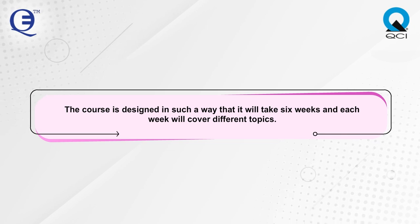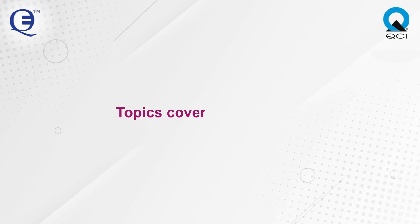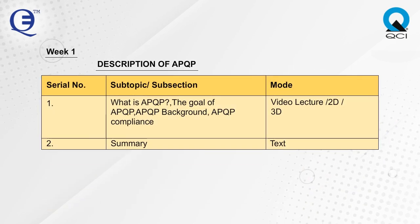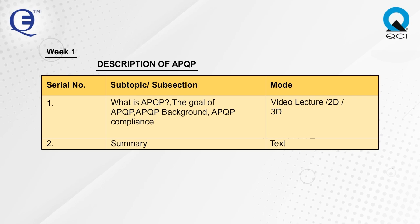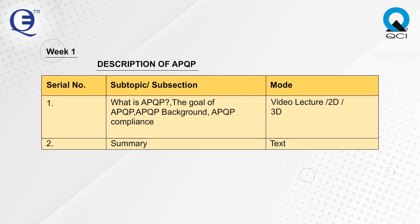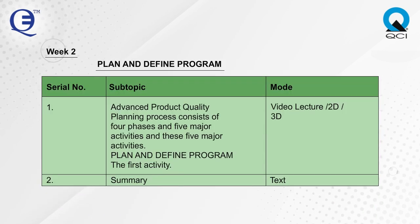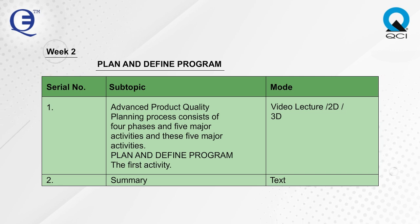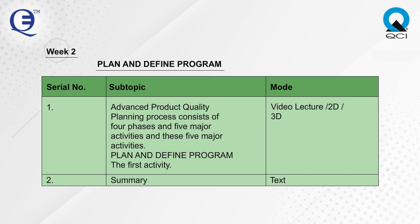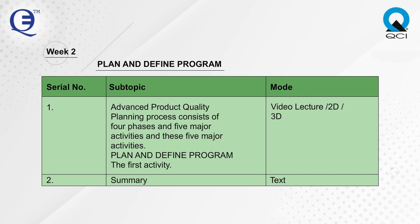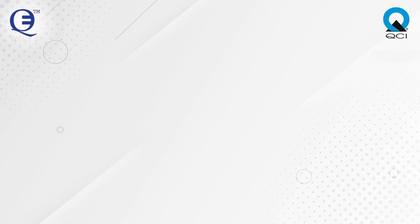The course is designed in such a way that it will take 6 weeks and each week will cover different topics. Week 1 covers the description of APQP — what is APQP, its goal, background, and compliance. Week 2 covers Plan and Define Program. The APQP process consists of 4 phases and 5 major activities, and Plan and Define Program is the first activity.